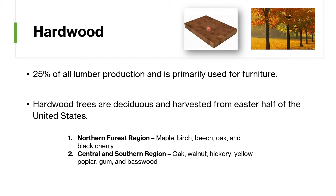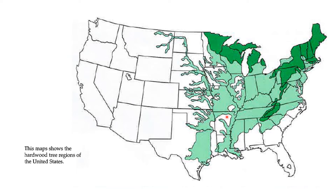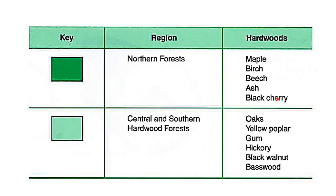Hardwood is 25% of lumber production and is used for furniture. Hardwood trees are deciduous. We harvest from two regions in the United States. The first is the Northern Forest Region, which gives maple, birch, oak, and black cherry. The central and southern region gives walnut, hickory, yellow poplar, gum, and basswood. You do not need to know all of them — just try to read and understand where the trees are in which region. You definitely need to know that 25% of lumber is hardwood and 75% is softwood. Softwood is for construction and structure; hardwood is for furniture. The hardwood tree regions are usually in the north and the east.